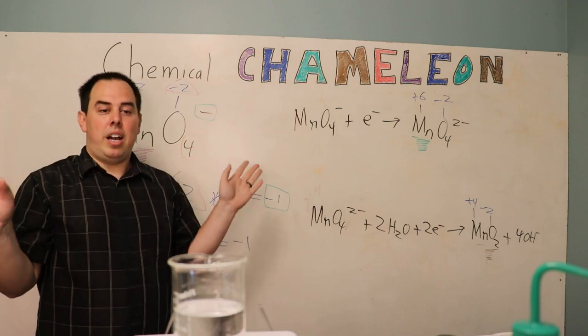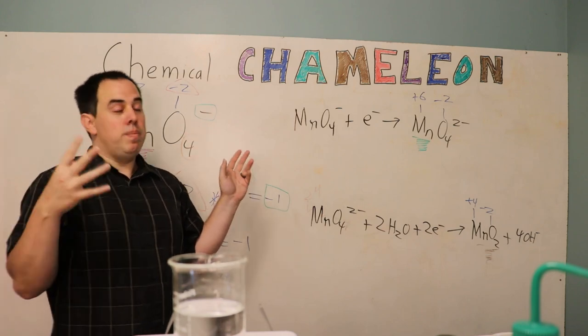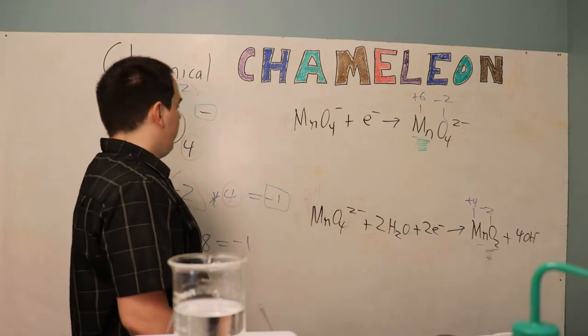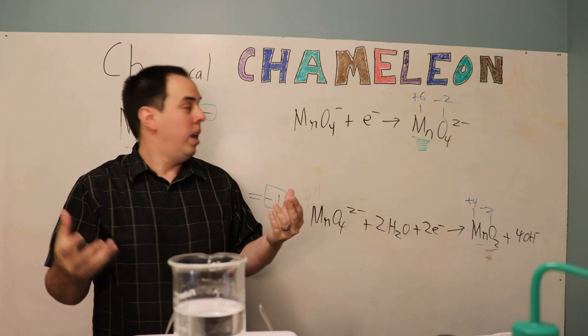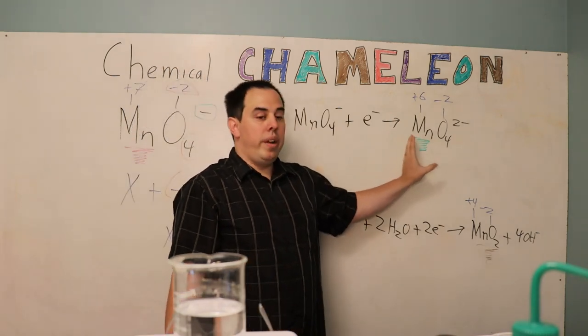Now there is a plus 5 oxidation state for manganese which is blue but we're probably not actually reaching that. It's probably just a mixture of the purple and green coming together which makes a blue color, actually a dark blue, and then it's going to rest on the green.